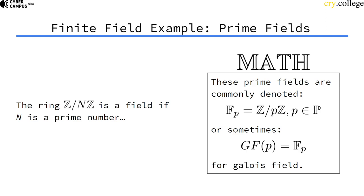These prime fields are usually denoted as F_p, with F for field and p for the prime number, or sometimes GF for Galois field. These are equivalent notations. Galois field is named because Evariste Galois was a famous French mathematician who laid some of the groundwork for modern algebra.